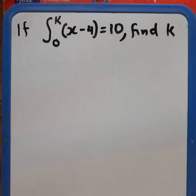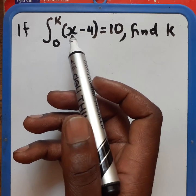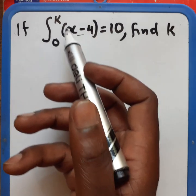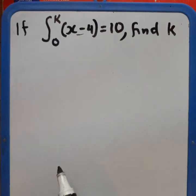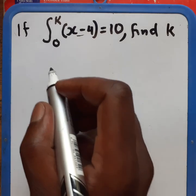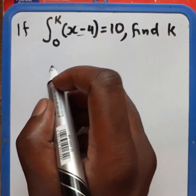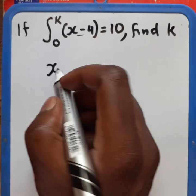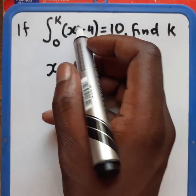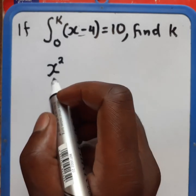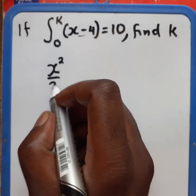So basically what we are supposed to do here is to integrate this part. We need to integrate what is in the brackets there. So the process of integration is that we need to add a power here to x. The power of x is already 1, so we'll add another one, which is going to be 2. Then the new index now should be divided.